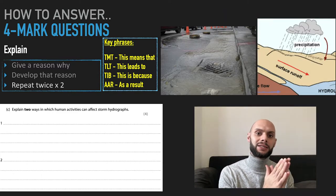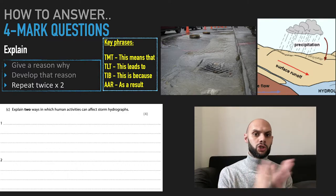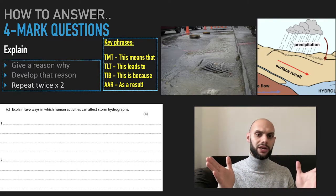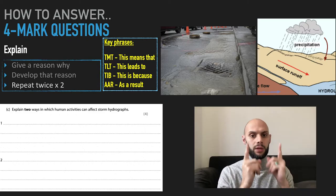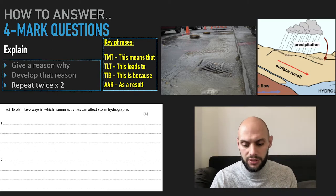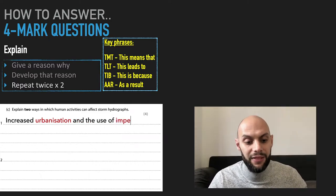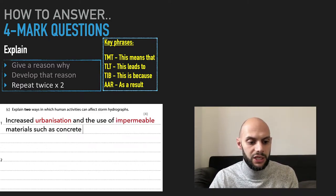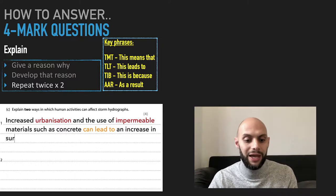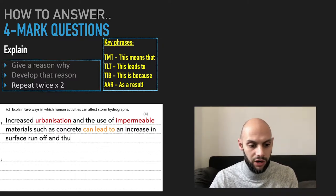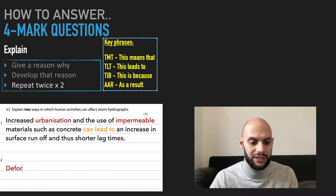This decreases the lag time. So the lag time is not long anymore. It's short because water goes straight into the rivers. Short lag time increases the risk of flooding. So something along the lines of this: Increased urbanization and the use of impermeable materials such as concrete can lead to an increase in surface runoff and thus shorter lag times.